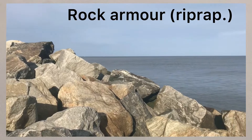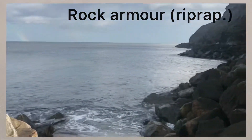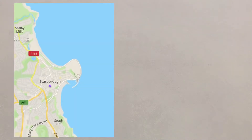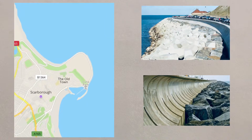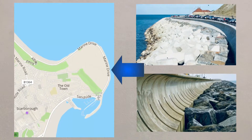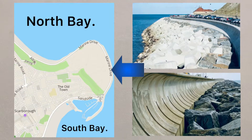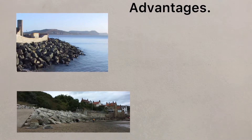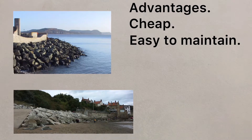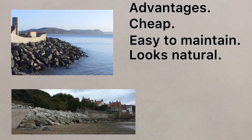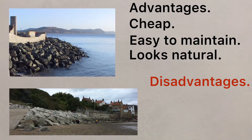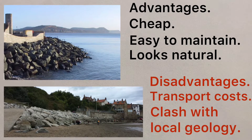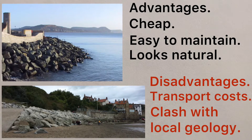Another type of barrier can be formed through rock armour, also known as riprap. Large boulders, often granite, are placed at the foot of a cliff to break up and absorb the energy from the waves. In places like Scarborough on England's east coast, a sea wall and rock armour work together to protect a main route joining the north and south bays. The advantages of rock armour include being relatively cheap and easy to maintain, whilst looking a little more natural than a sea wall. Disadvantages include the expense to transport the rocks, often from abroad, and that they might clash with the local geology, so look a little out of place or obtrusive.